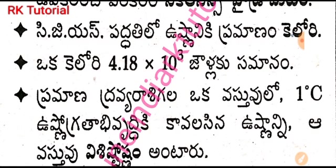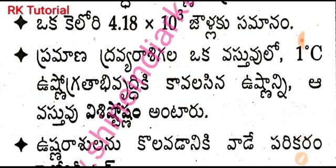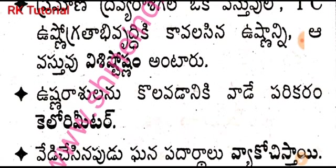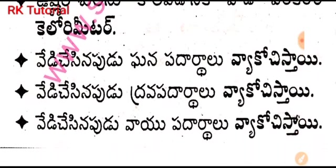In the CGS system, the unit of heat is the calorie. One calorie equals 4.186 joules (approximately 4.2 joules). The heat energy required to raise the temperature of a unit mass of a substance by one degree Celsius is called specific heat. The instrument used to measure heat energy is a calorimeter.